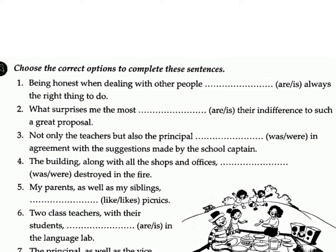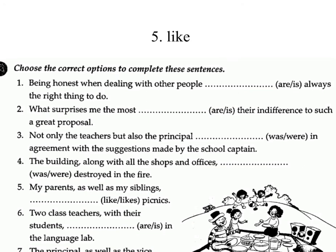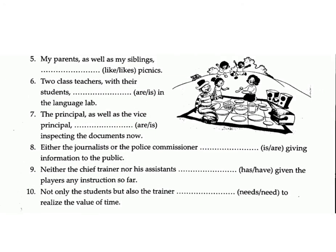Exercise G: Choose the correct options to complete these sentences. 1. Being honest when dealing with other people — are/is — always the right thing to do. Answer: is. 2. What surprises me the most — are/is — their indifference to such a great proposal. Answer: is. 3. Not only the teachers but also the principal — was/were — in agreement with the suggestions made by the school captain. Answer: was. 4. The building, along with all the shops and offices, — was/were — destroyed in the fire. Answer: was. 5. My parents, as well as my siblings, — like/likes — picnics. Answer: like.